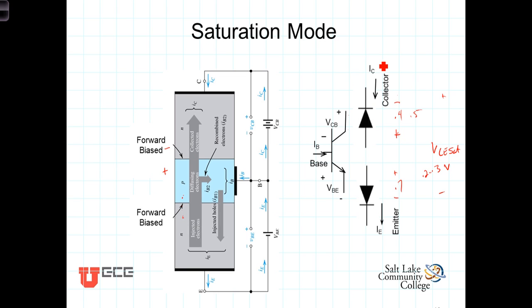In saturation, IC is no longer equal to beta times IB. In fact, IC will be much less than beta times IB. We define a new beta: IC over IB under saturated conditions is referred to as the forced beta, and the forced beta is significantly less than the active region beta.